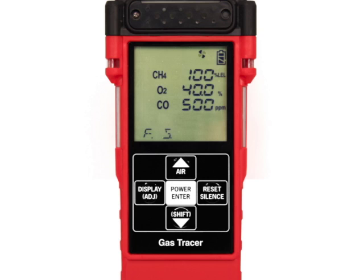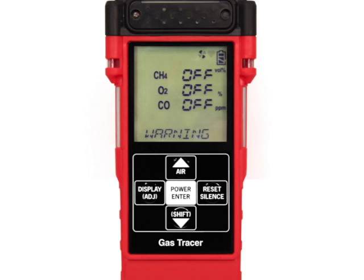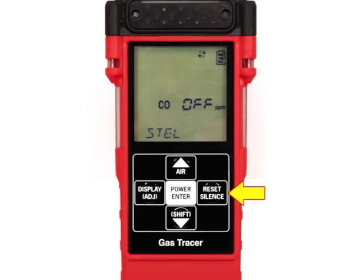The remaining screens are only displayed for about a second each. You will see the full-scale values for each channel, the low alarm point for each channel, the high alarm point for each channel, followed by the STEL and TWA set points for carbon monoxide. If the HC range is set to percent volume only, you will have to press and release the Reset Silence button for each of these screens to acknowledge that there are no alarms when the unit is operated in that fashion.